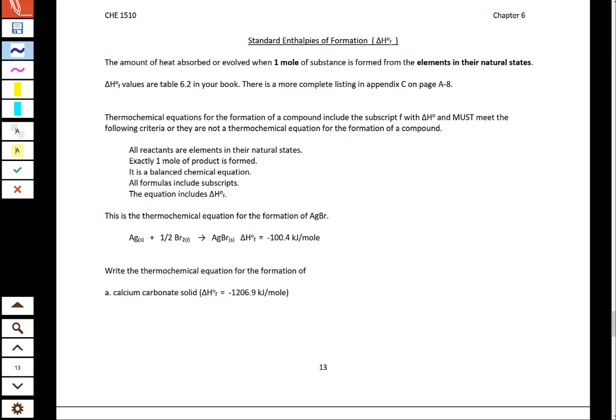Welcome back to Chemistry 1510 Video Notes. We're going to talk about Chapter 6, the Standard Enthalpies of Formation. We have already talked about enthalpies, they are delta H's, and when they are standard, they have that little circle superscript up here that we called a knot.